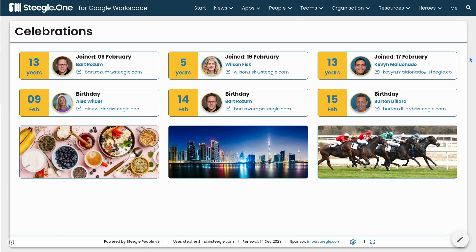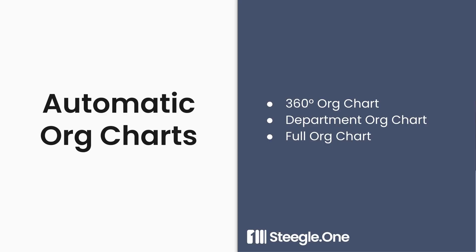Social Discovery shows off cover photos so you can find someone by their image. The automatic org chart provided by Stiegel One Intranet gives you a 360 degree org chart showing where a person sits in the organisation, a department org chart showing the whole team, or the full org chart of the whole organisation.